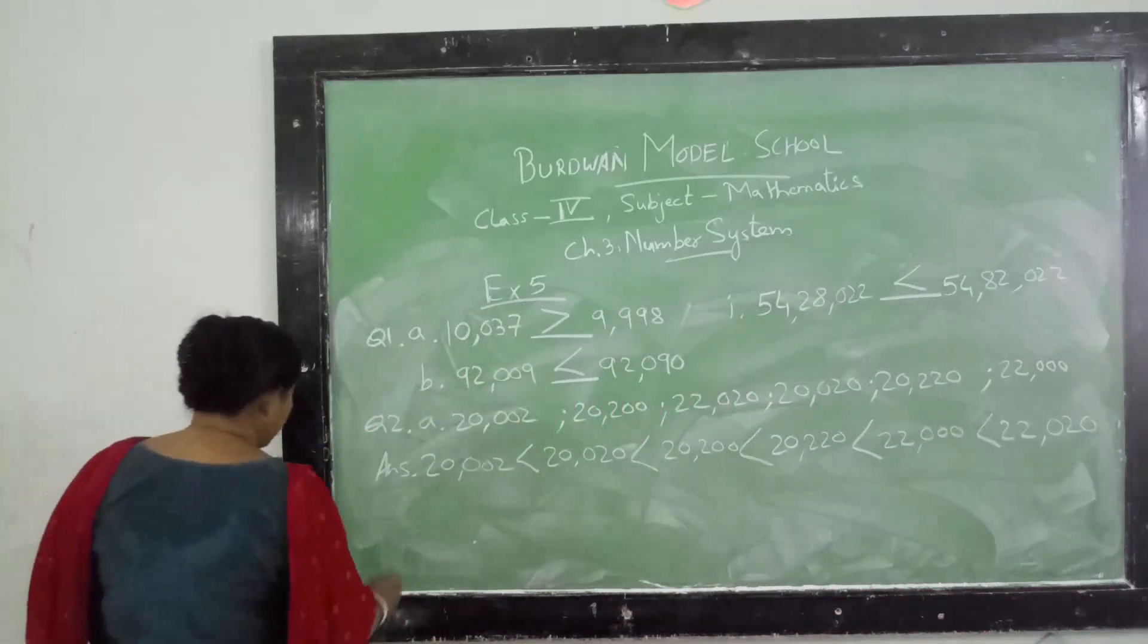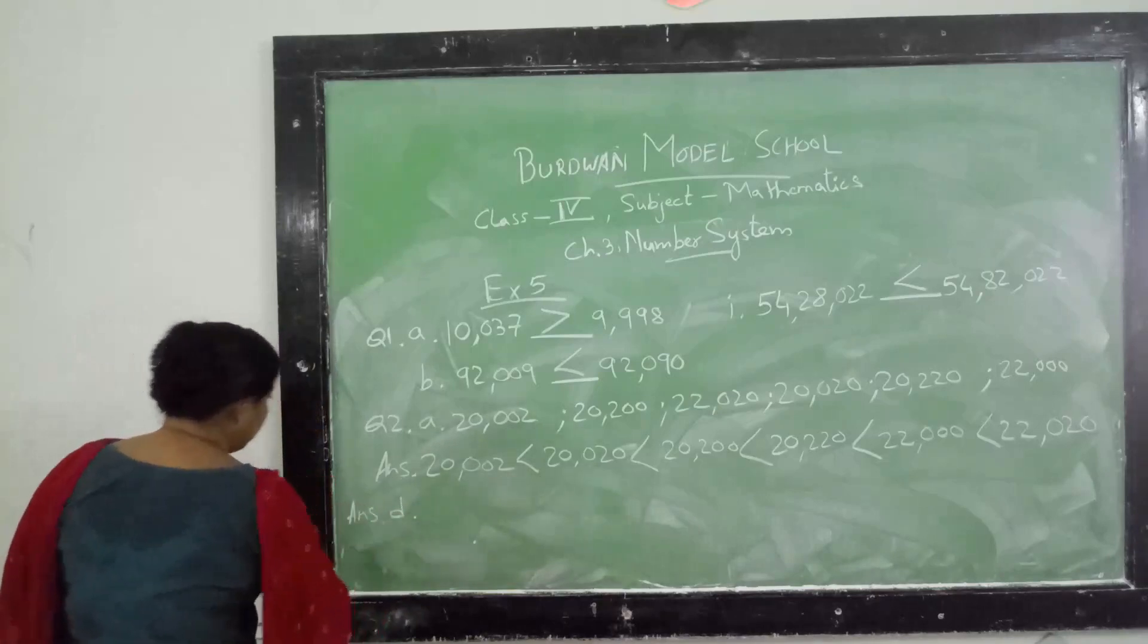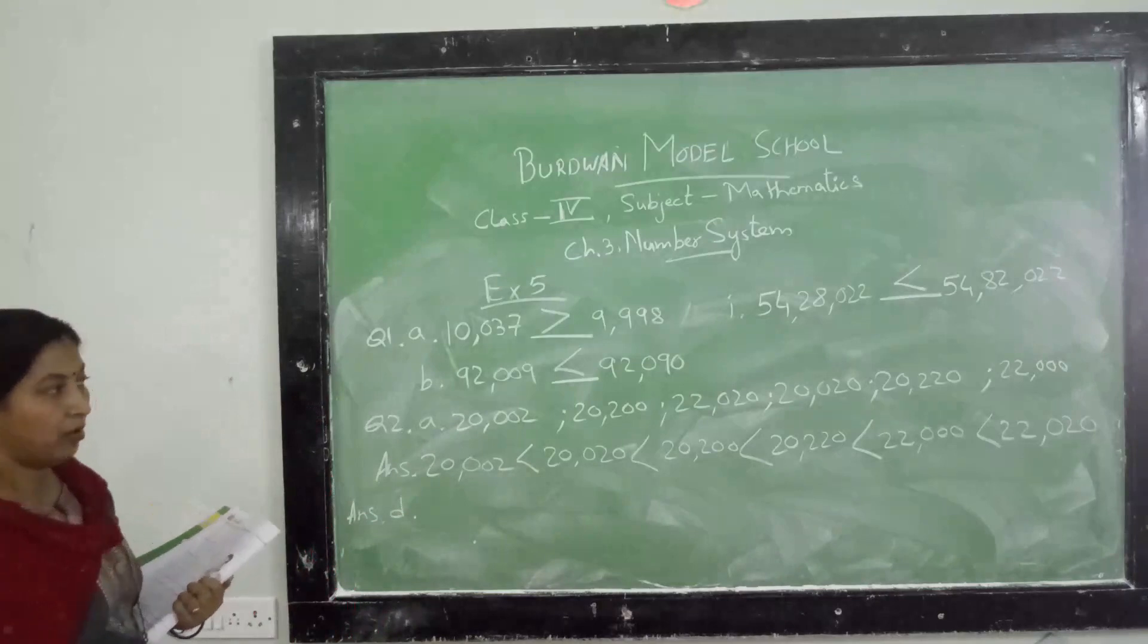Do one more. Suppose I am showing you number d. I am directly writing the answer because it will take a lot of time. The questions are already given in your copy - sorry, in your book - so I am not writing the question, I am writing the answers.